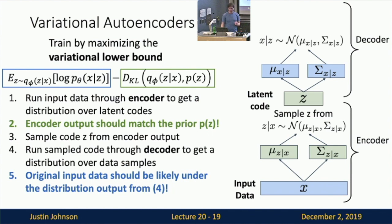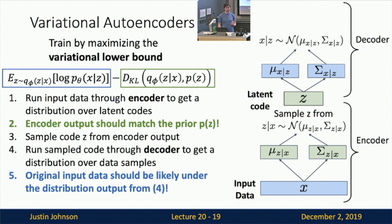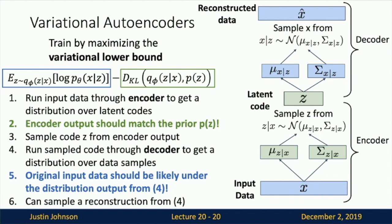The two terms in the VAE objective are somewhat fighting against each other. The reconstruction term encourages the latent codes to contain enough information to reconstruct the input data. The KL divergence term forces the predicted latent code distributions to be simple and close to the Gaussian prior. Together, these two terms define the full training objective for the variational autoencoder.